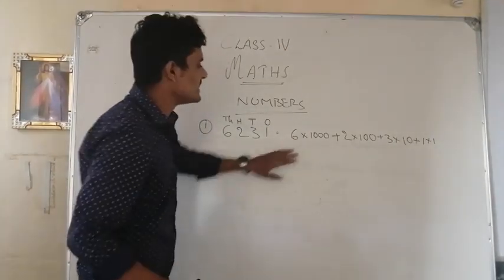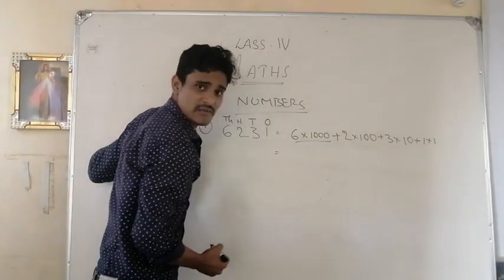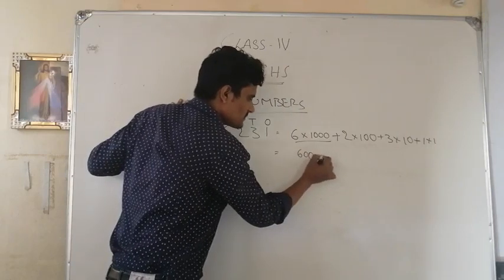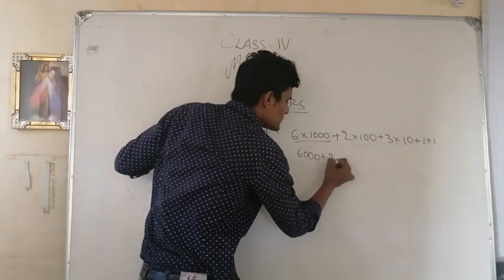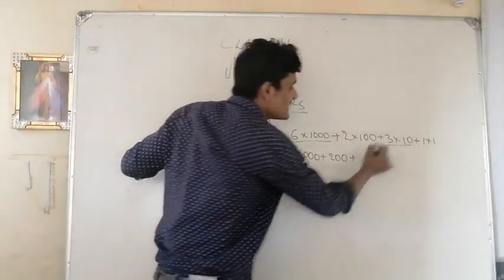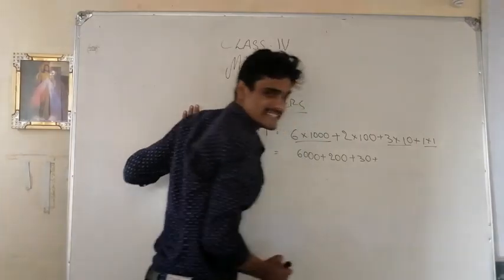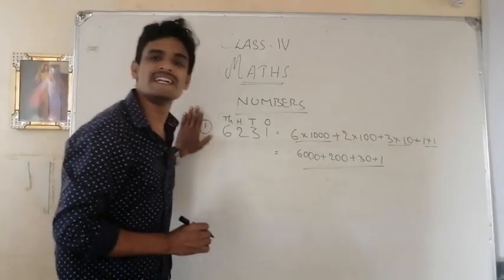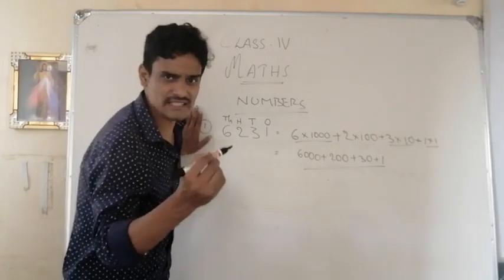So now let's calculate: 6 in the 1,000s place — 6 × 1,000 = 6,000. What is the next one? 2 in the 100s place — 2 × 100 = 200. 3 in the 10s place — 3 × 10 = 30. 1 in the 1s place — 1 × 1 = 1. So, 6000 + 200 + 30 + 1. This is called the expanded form. Can you understand, children? Let's move a little faster.